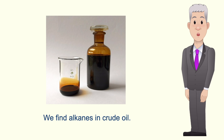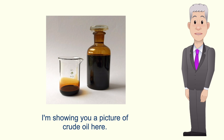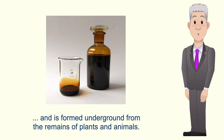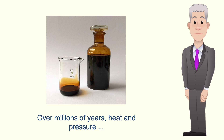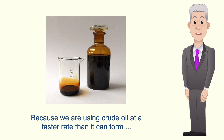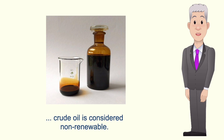We find alkanes in crude oil, shown here. Crude oil is a fossil fuel and is formed underground from the remains of plants and animals. Over millions of years, heat and pressure convert the chemicals in these remains into crude oil, and because we're using crude oil at a faster rate than it can form, crude oil is considered non-renewable.